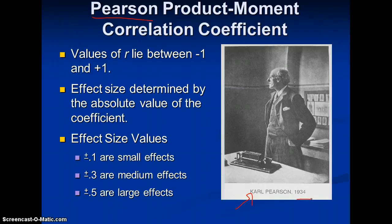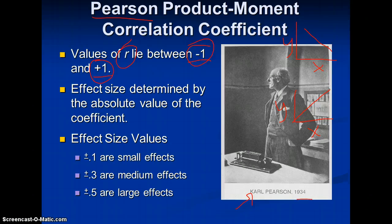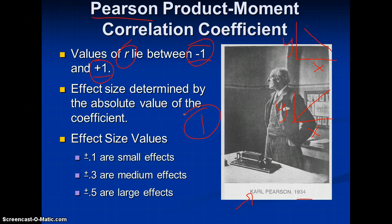The values of the Pearson correlation coefficient lie between negative one and positive one. Negative one is a perfectly negative relationship, and positive one is a perfectly positive relationship. The effect size is determined by the absolute value of the coefficient — the absolute value of both negative one and positive one is always one, meaning the closer you get to an absolute value of one, the stronger the correlation.